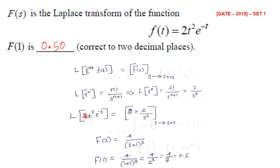Applying the shifting property for e^{-t}, s is replaced by s plus 1. The Laplace transform of 2t² is 2·(2/s³) = 4/s³. After the shift, f(s) = 4/(s+1)³. To find f(1), replace s with 1: 4 divided by (1+1)³ = 4/2³ = 4/8 = 0.5. So 0.50 is the answer.